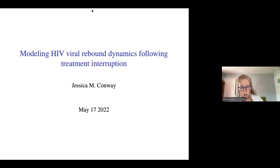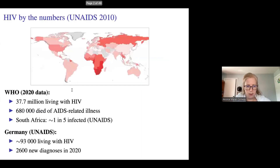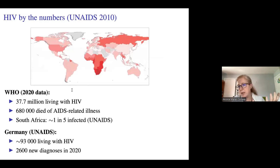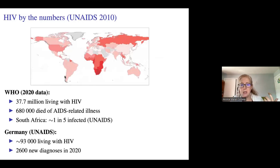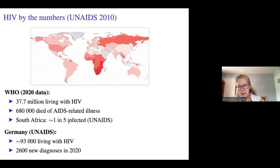Let's place HIV in context. There are roughly 38 million people living with HIV today. 680,000 individuals died of AIDS-related illness in 2020. This prevalence map indicates the concentration of HIV cases throughout the world — darker colors indicate higher prevalence. South Africa in particular is very badly hit by HIV, with roughly one in five people infected. Roughly 93,000 Germans are living with HIV, with 2,600 new diagnoses in 2020.